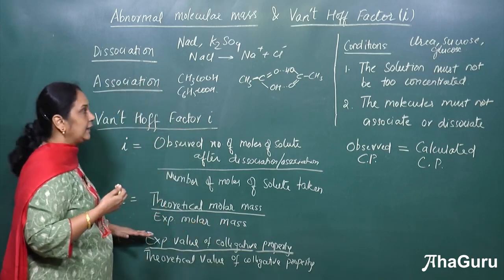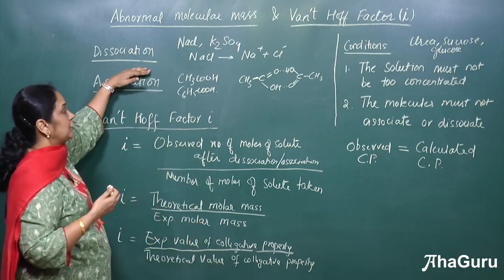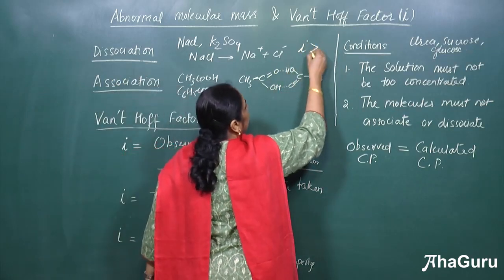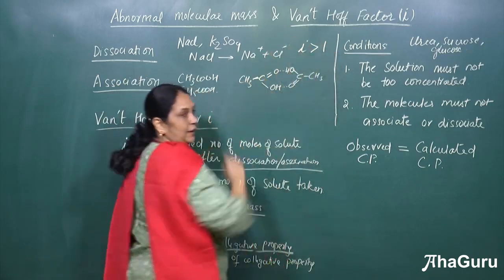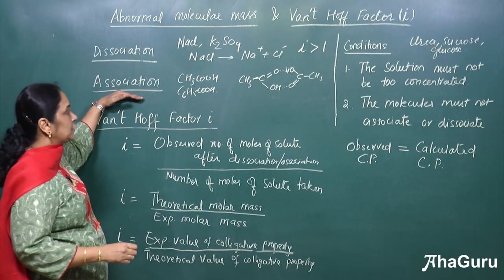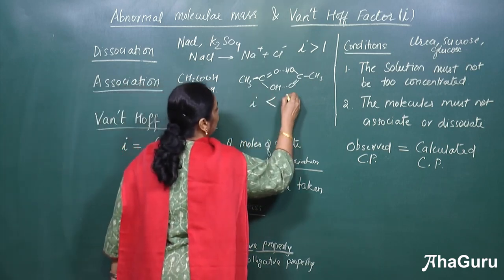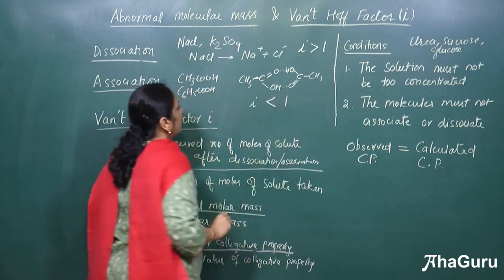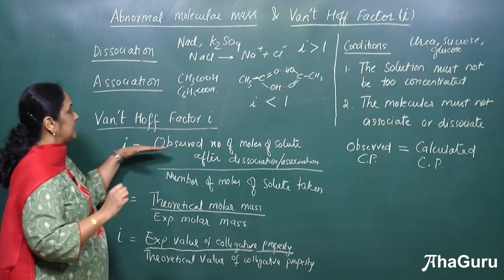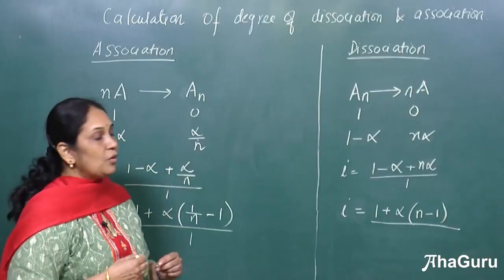By calculating i, whenever dissociation happens, i is usually greater than 1. And whenever association occurs, i will be less than 1. This is what the Van't Hoff factor tells us.